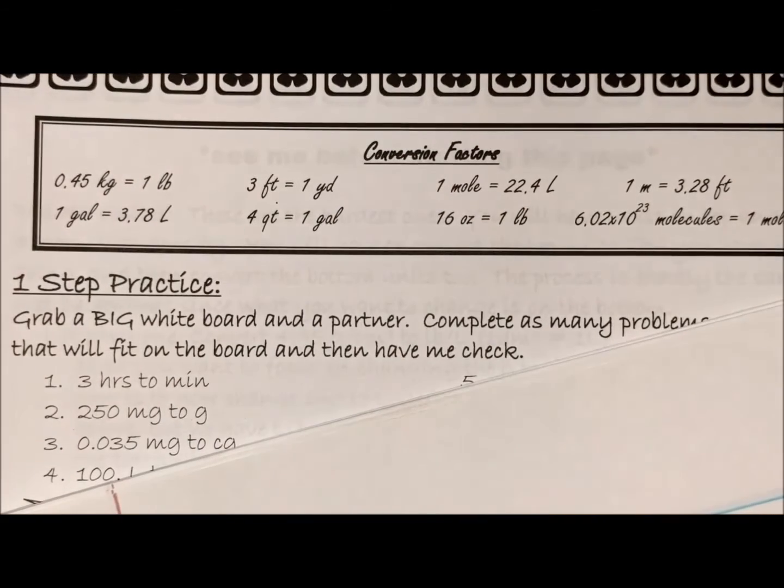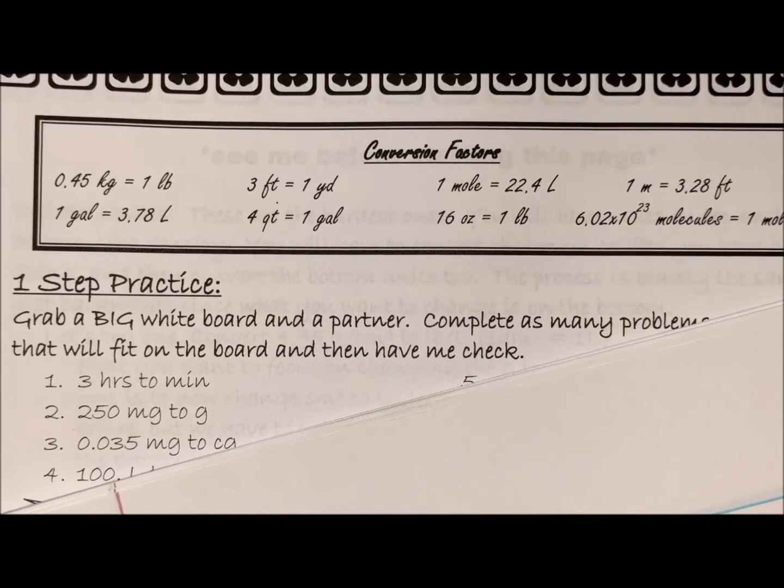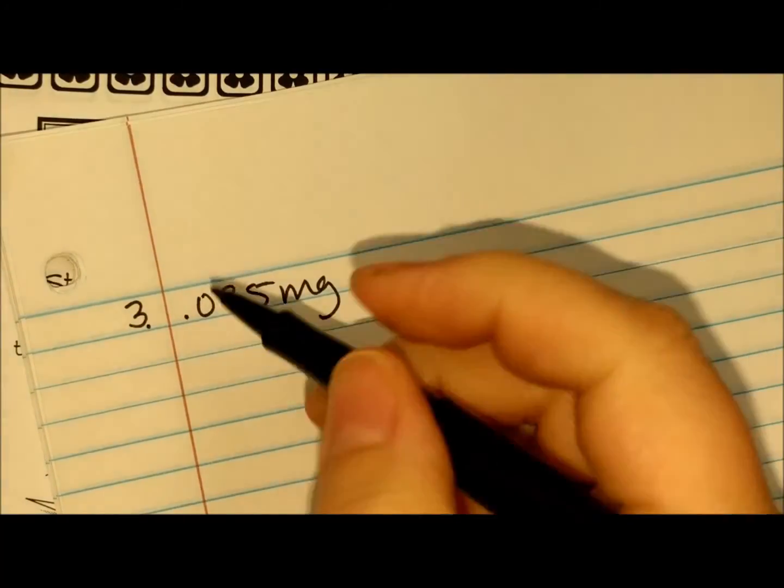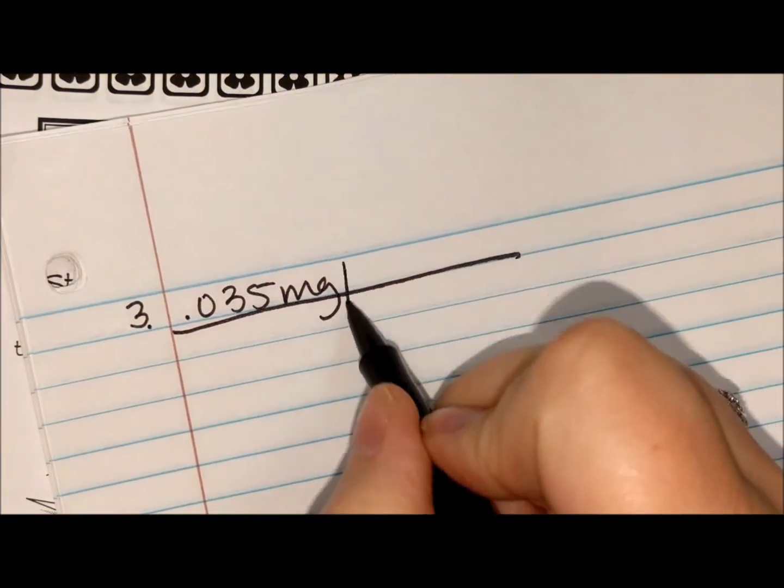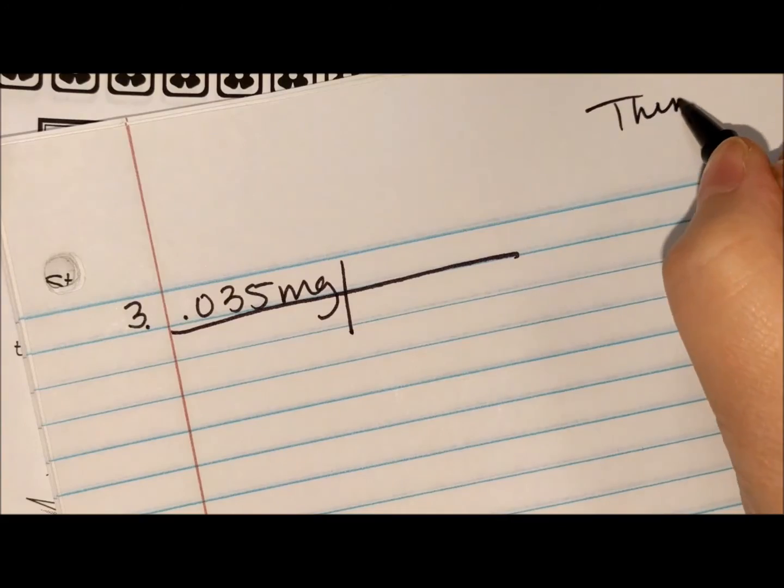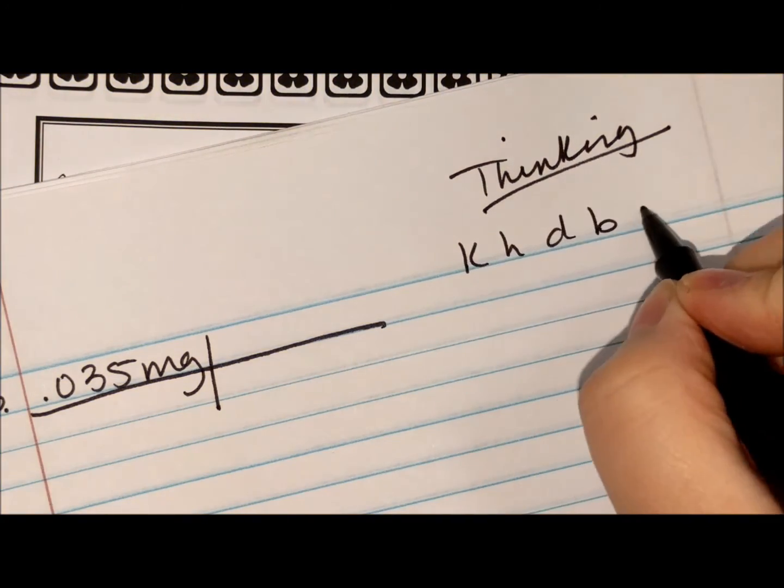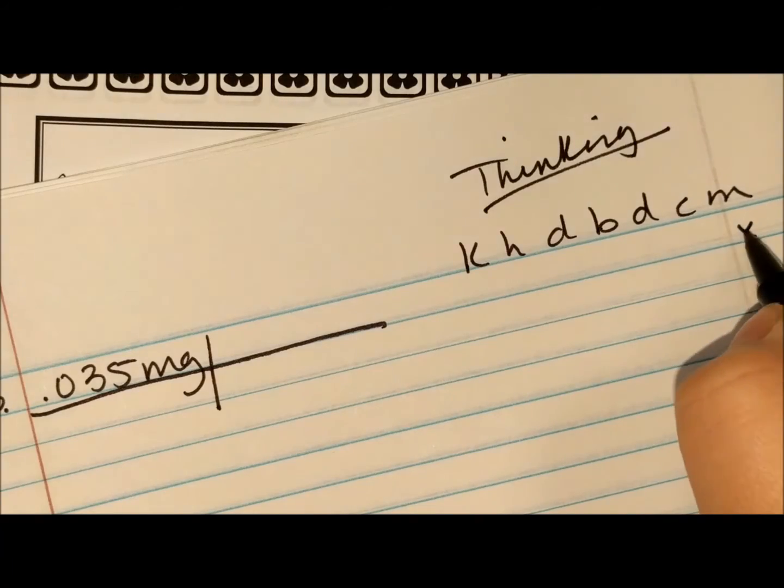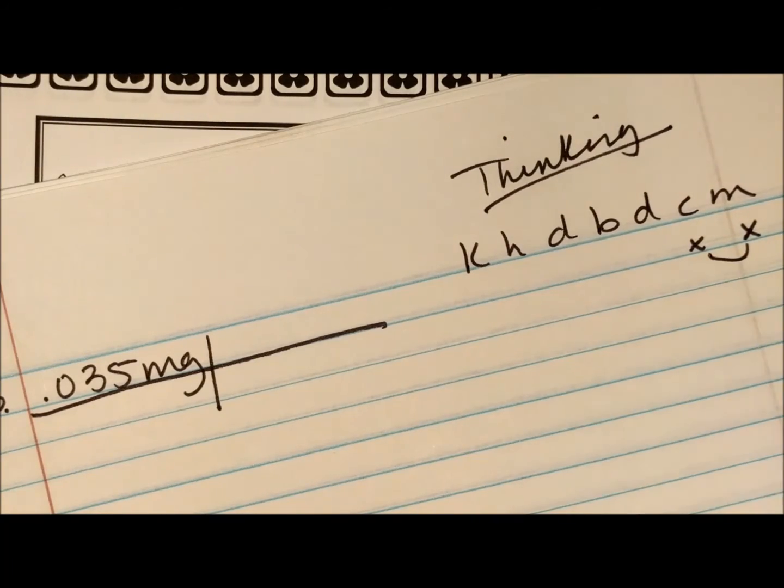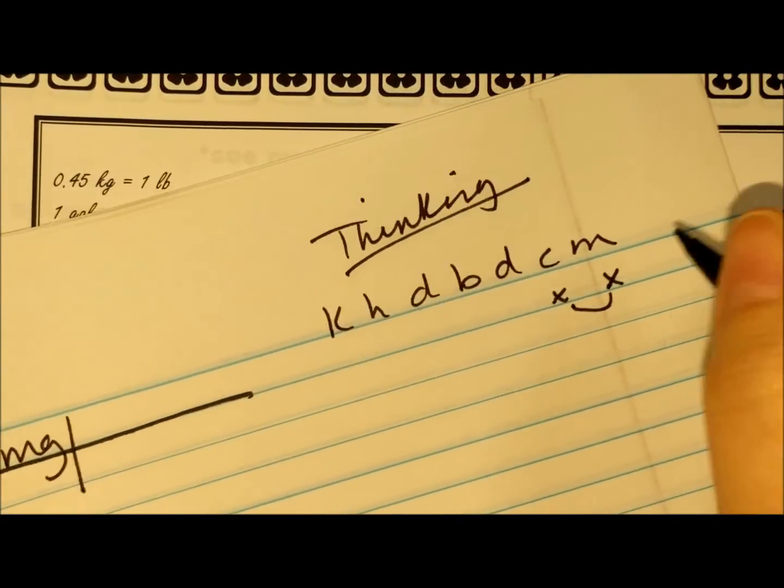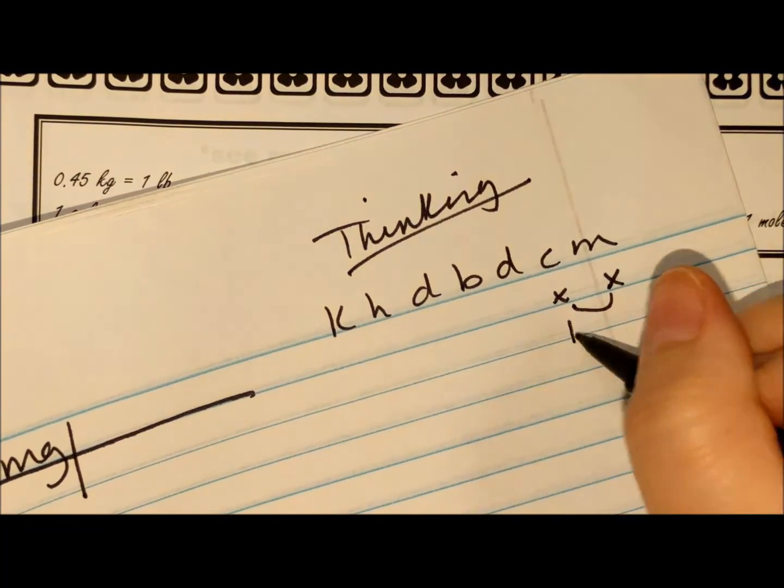And this is what I'm thinking over here—thinking King Henry. Milli's right here and centi's right here. That's only one spot. That means I have 10 little ones in one big one. So 10 milligrams and one centigram.